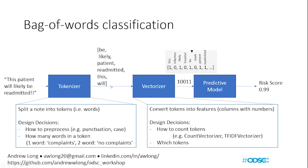Once we have this list of words, we feed it into the vectorizer, which converts tokens into features — variables representing the different columns of your dataset. For Bag of Words classification, you create one column for each unique token in your corpus. For example, if the words in your dataset are: 'this', 'infection', 'likely', 'hospital', 'be', 'meds', 'patient', 'readmitted' — for this particular sentence you'd get a 1 in 'this', 'likely', 'be', 'patient', and 'readmitted', but zeros for 'infection', 'hospital', and 'meds', since those words don't appear. That is one way of using the vectorizer to turn tokens into numbers.